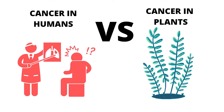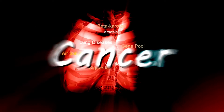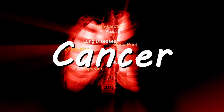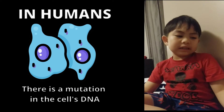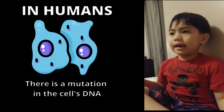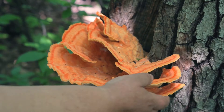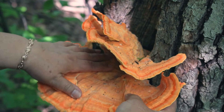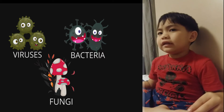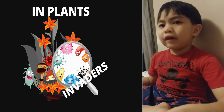Plants and humans get cancer in different ways. It causes cancer in humans if there is a mutation in a cell's DNA. Why do plants get cancer? They do get cancer but it's different to humans. Plants get cancer if viruses, fungi, and bacteria invade.